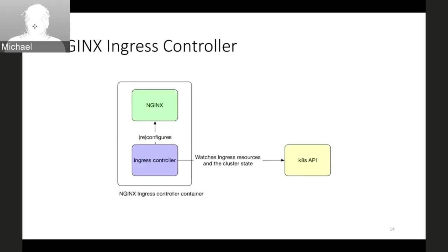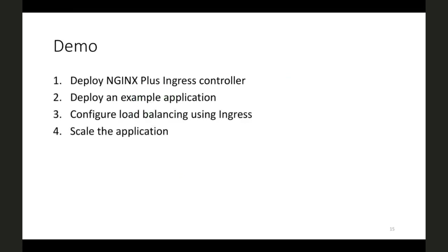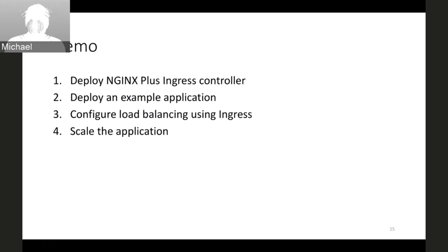The NGINX Ingress controller is deployed in a container, which contains both NGINX and the Ingress controller software. The Ingress controller software watches the Kubernetes API for any deployed Ingress resources and the current cluster state. When Ingress resources change or the cluster state changes, the Ingress controller software reconfigures NGINX. In our demo, we will deploy the NGINX Plus Ingress controller on OpenShift, deploy an example application, configure load balancing using Ingress, and then scale the application up and down.